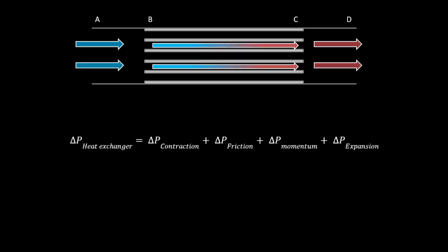And the pressure loss equation is made up of four things. The pressure loss as the air flows into the heat exchanger, and then as it flows along the heat exchanger, we have friction and momentum losses, and then we have a gain as it exits the heat exchanger.